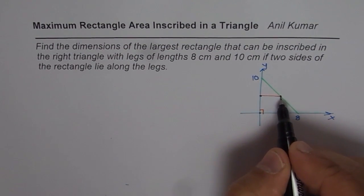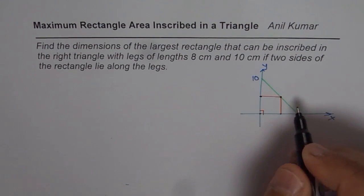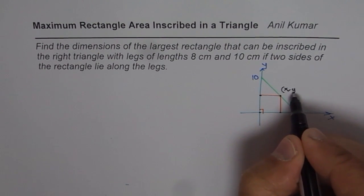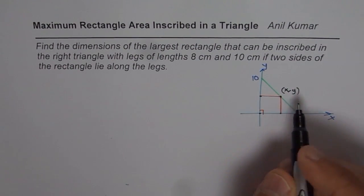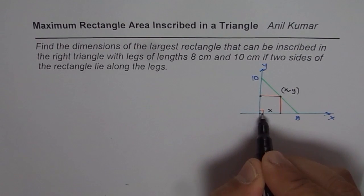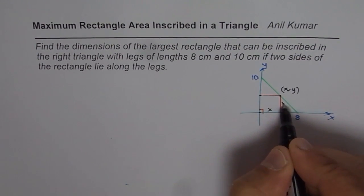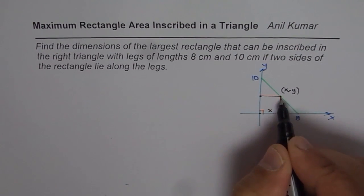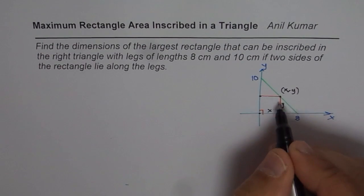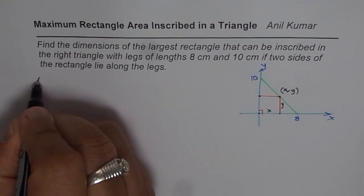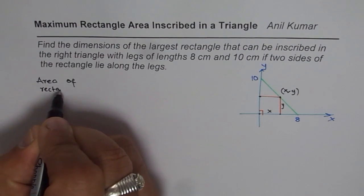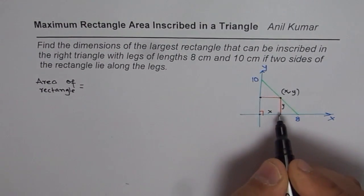Let's consider a point on the hypotenuse of the triangle. In general, this point is (x, y) for any value. That means the length of the rectangle is x — the horizontal distance — and y is the height of the rectangle. From here, area of the rectangle equals x times y.